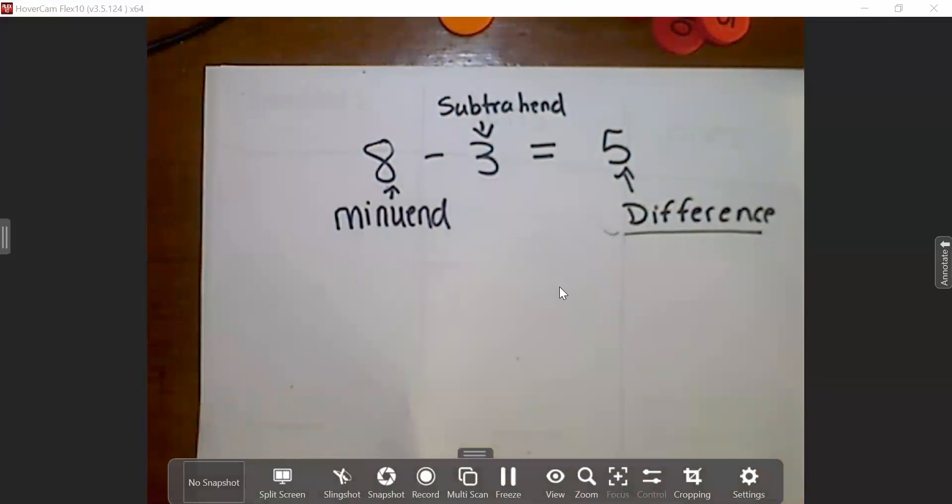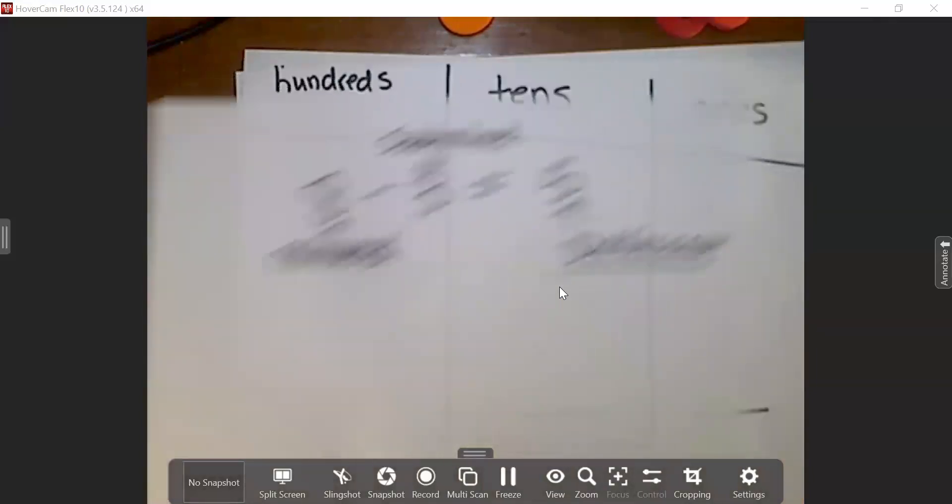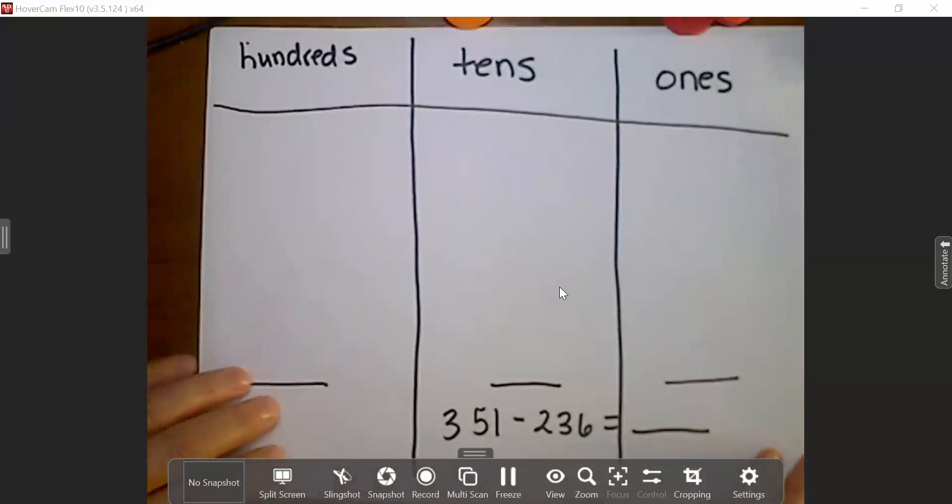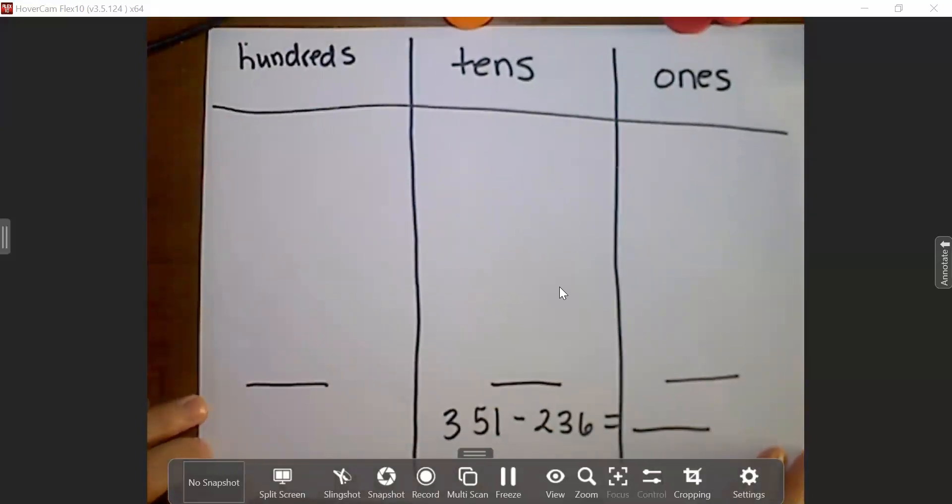So we're ready to look at a problem now. I have my place value chart, and today we're going to be subtracting 351 minus 236. So step one, I am going to build my minuend, the first number. You notice it's larger.